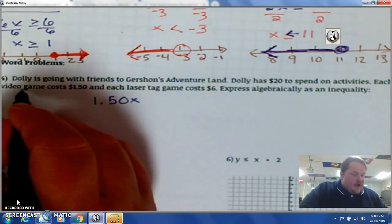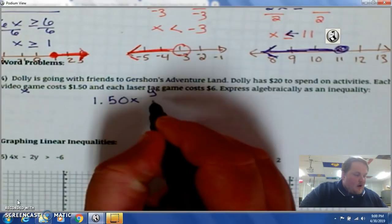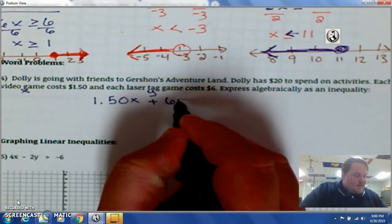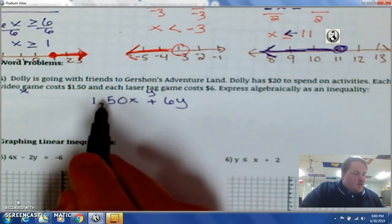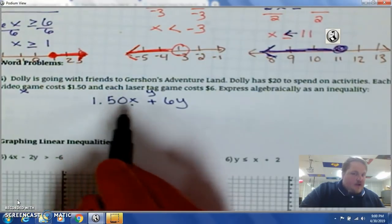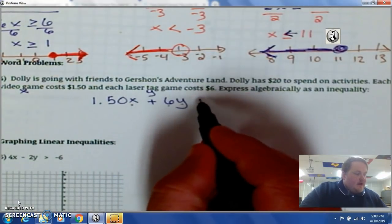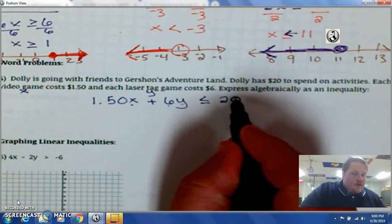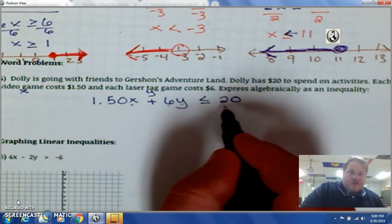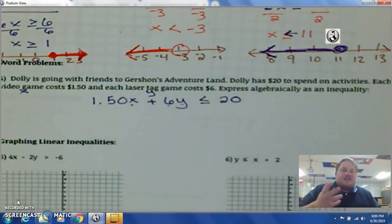$1.50x. We'll let video games be x and laser tag be y. Plus $6 per laser tag game. So, $1.50 times the x, which is video games. Plus $6 times y, which is laser tag. Will have to be less than or equal to 20. Can't be more than 20 because we only have 20 bucks to spend. So, that's a way that you can algebraically represent that.